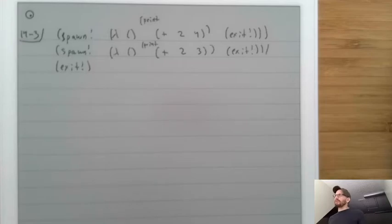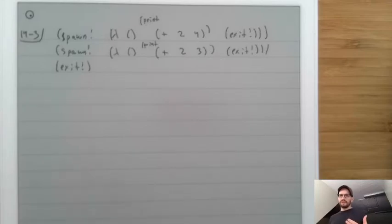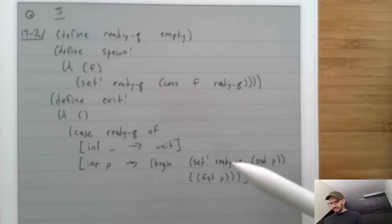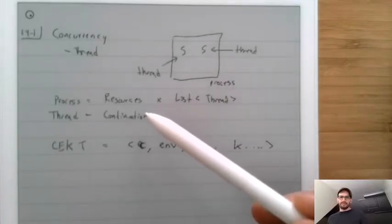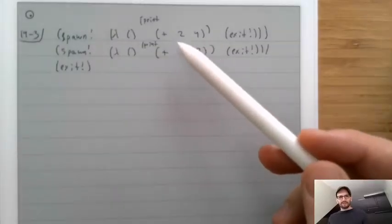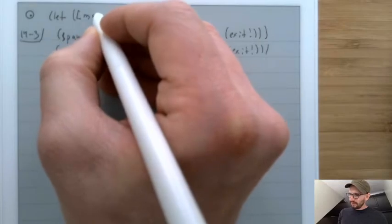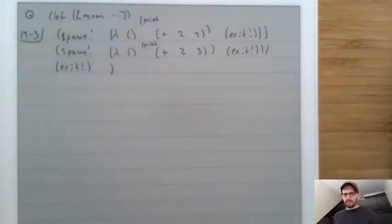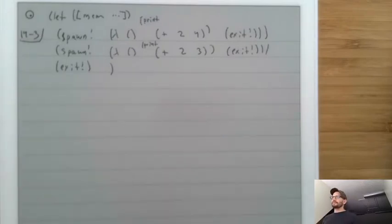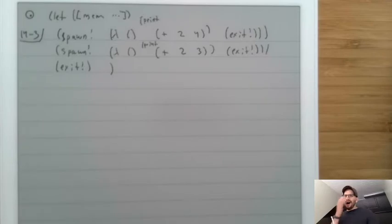In real programming, threads are most useful when they can communicate with one another, rather than only through memory. Threads share the same resources, i.e., the same memory. In our code, that would mean these lambdas would share the same variables - we could put them inside a let with some shared memory, and all of them would be able to modify it. However, it's very difficult to directly modify shared memory and write a correct program, so instead what people do is build concurrency abstractions.